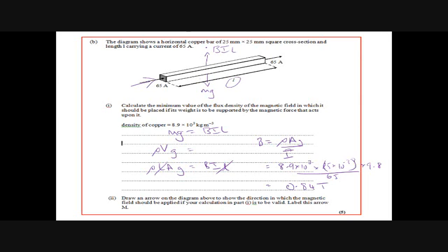Draw an arrow on the diagram to show the direction the magnetic field should be applied. The current is going this way, the force needs to be going that way. So then if you get your left hand and you put your thumb upwards and your second finger up to the right, then you should get a force in this direction. So the direction of the magnetic field, the flux density, must be going away from you.